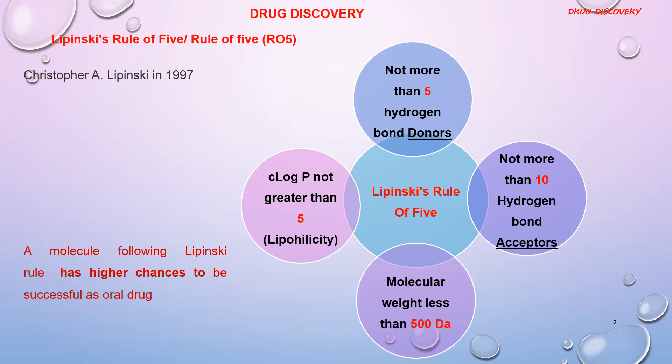These four rules are the physicochemical properties a molecule must satisfy to be used as an oral formulation. Note: there are only four rules, but it is called the rule of five because they are all multiples of five. Violation of two or more of these rules makes the molecule not viable as an oral drug. It should also be remembered that molecules following the Lipinski rule need not be pharmacologically active — they could simply have a good pharmacokinetic, that is ADME, profile.